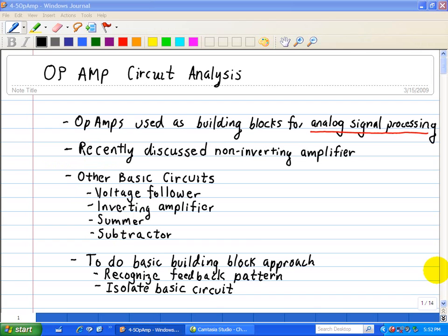Now in order to do a basic building block approach to designing circuits using op amps is to recognize the feedback pattern. And then once you do that, you need to isolate the basic circuit as a building block. And we'll illustrate this with an example.